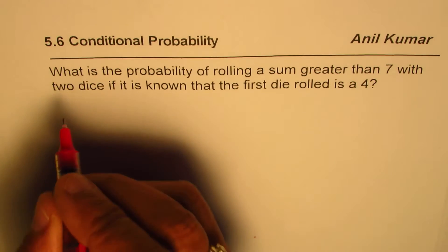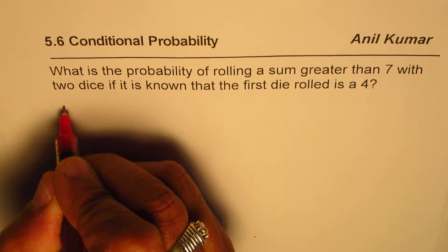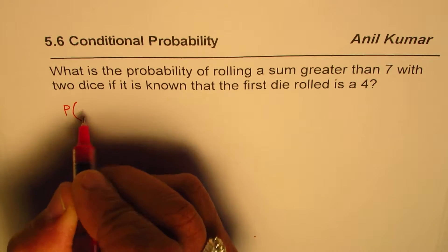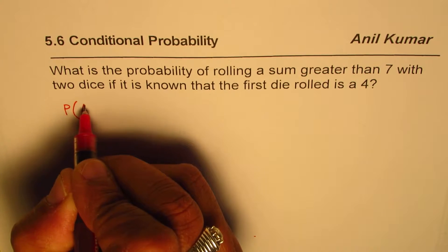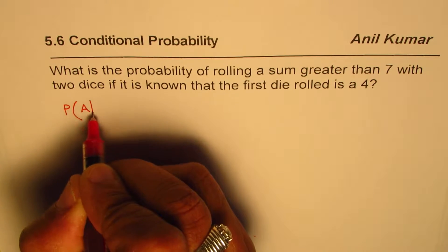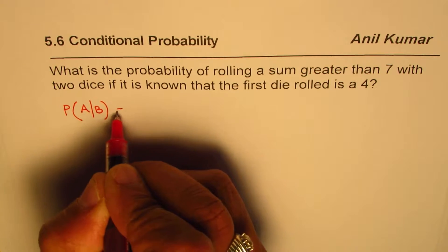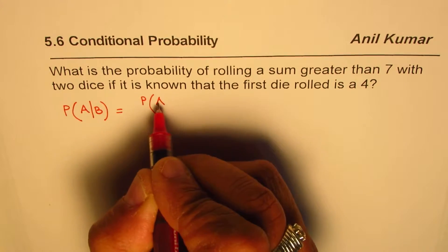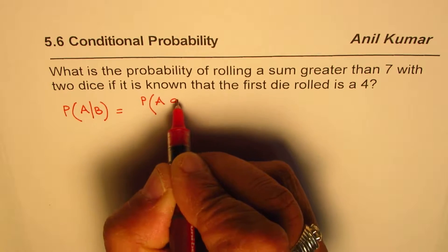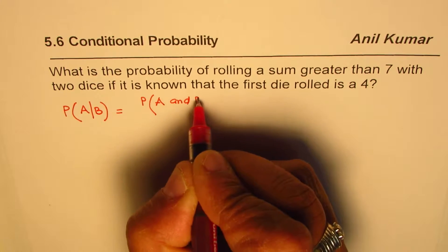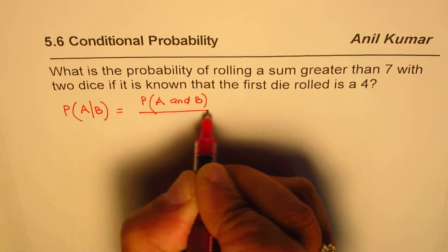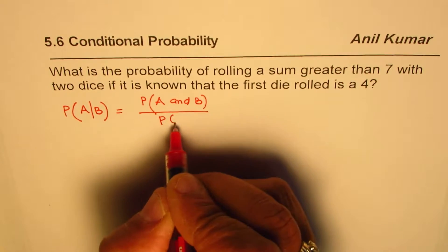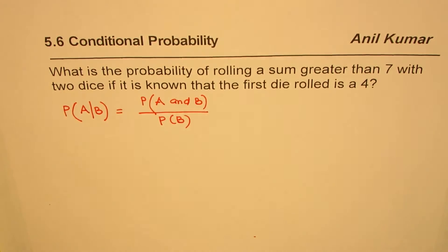So whenever we are talking about conditional probability, we can use the formula that probability of event A happening when B has already occurred is equal to probability of both A and B, so we can say A and B or with a sign of intersection, over the probability of event B. So that is the formula which we can apply.